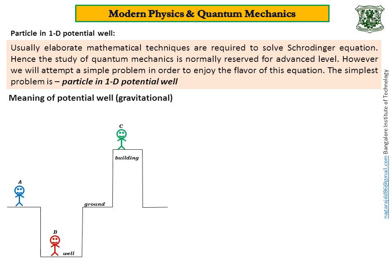First, let me explain the meaning of Potential Well. For the sake of explanation, I take a Gravitational Potential Well. Look at this diagram. This is the ground, that is Earth's surface, and I have a well here and also one high-rise building. There are three guys: one over here, let me name him A, one over here I will call B, and one more C over here.